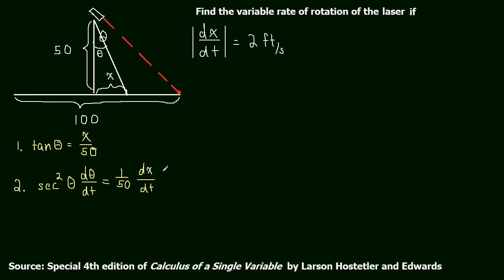And then the derivative of the other side is just going to be 1 over 50 dx/dt. Okay. And now we can plug in dx/dt we know is going to be 2 feet per second. The rate at which that beam moves across the floor is going to be constant at 2 feet per second.